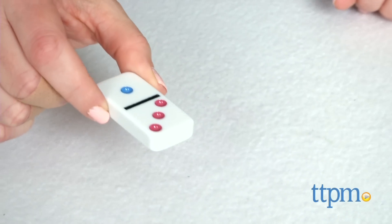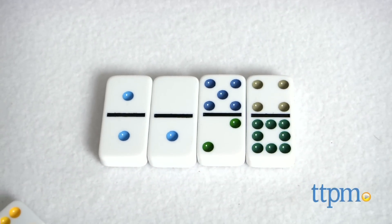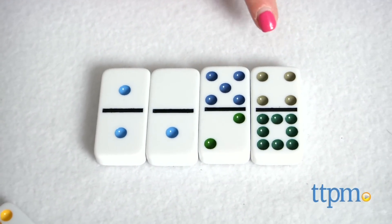A round ends when a player has played her last domino. That player gets to score zero points, and all other players must count up the dots on their remaining dominoes to get their scores for that round.